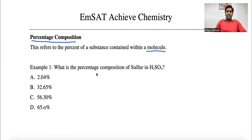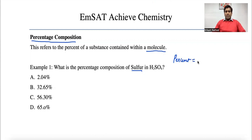The first example is: what is the percentage composition of sulfur in H₂SO₄ — that is, asking what is the percentage of sulfur in sulfuric acid. To deal with percentage, we need the basic percent formula: percentage is always written as part over total times 100.